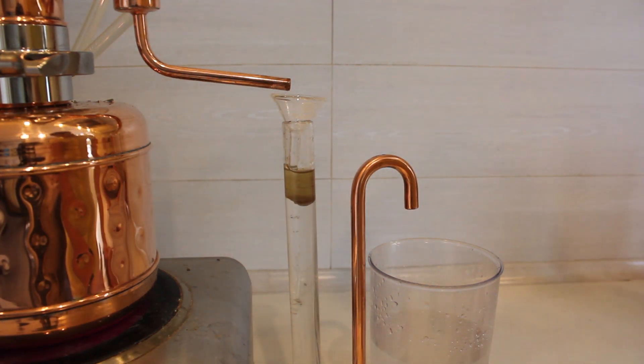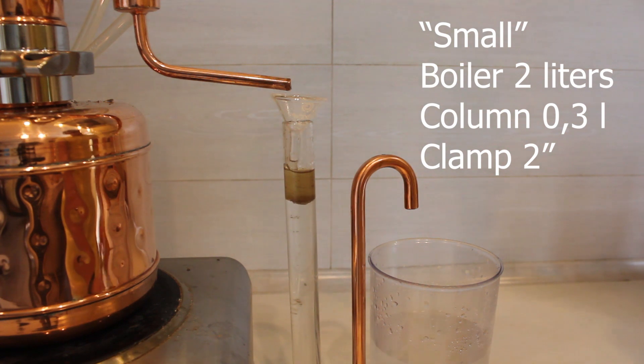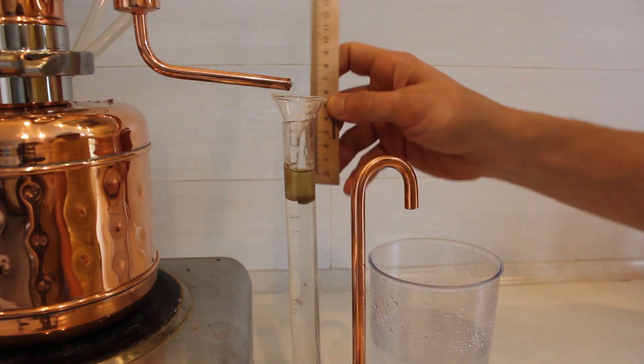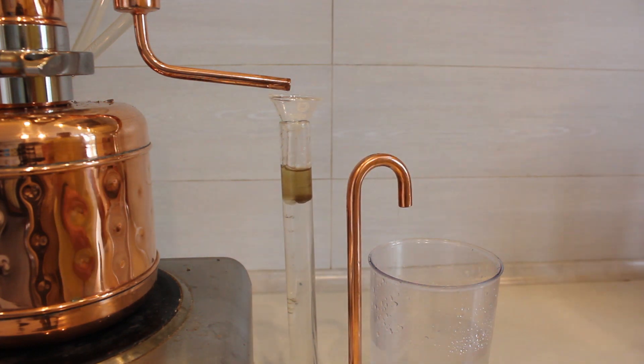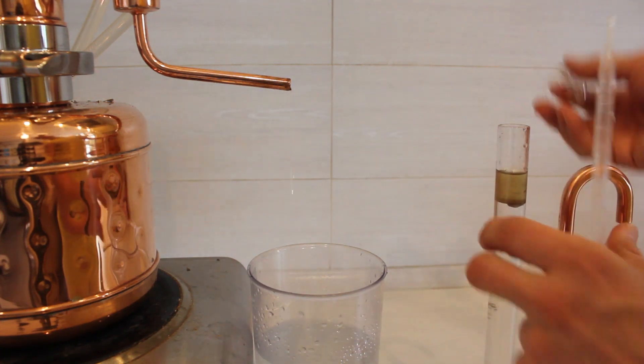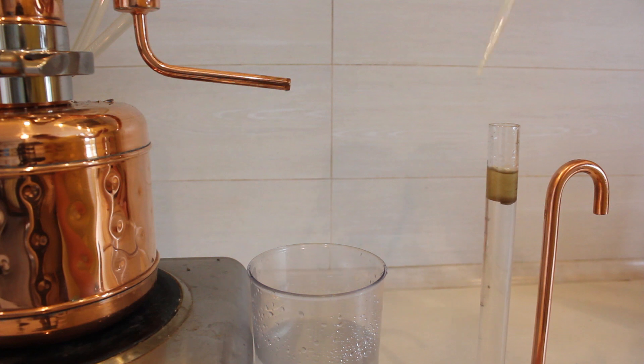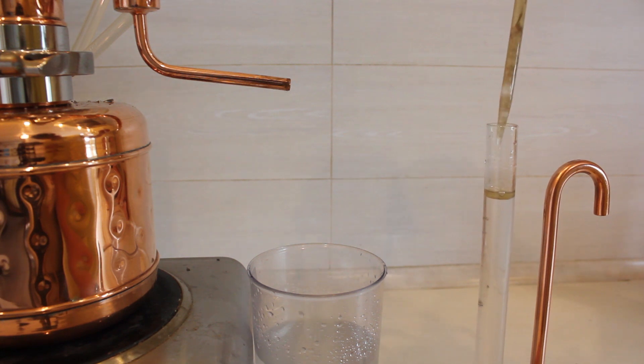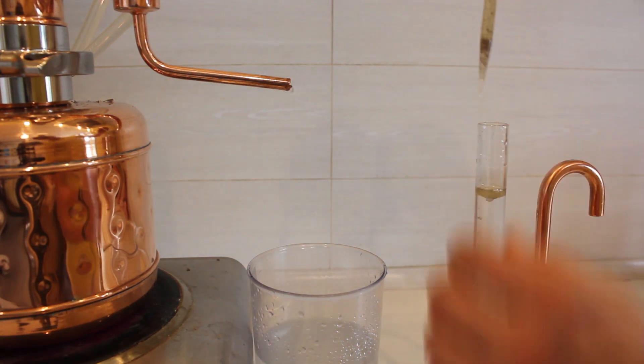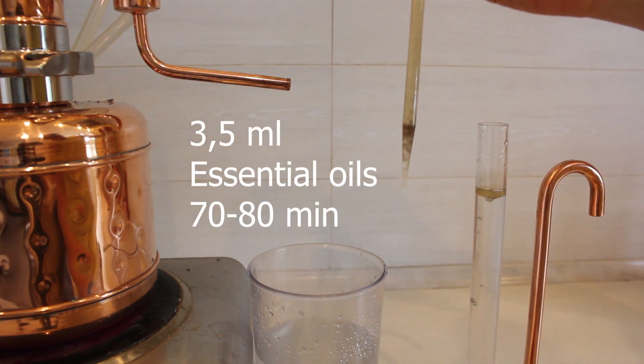So this is the result of essential oil extraction using a two-liter alembic with a two-inch column. We have done 10 times of filling and refilling the column and we have got approximately 15 millimeters of essential oil. Let's see how much it is in milliliters. This is approximately three and a half milliliters of essential oil.